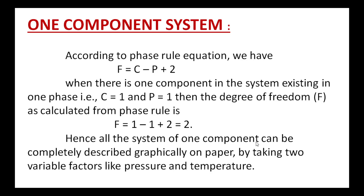Hence, all systems of one component can be completely described graphically on paper by taking two variable factors like pressure and temperature. So, for a one-component system, we can represent it graphically by taking pressure and temperature as the two variable factors.